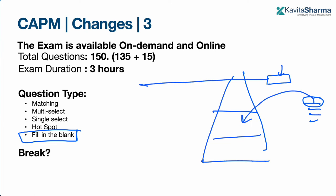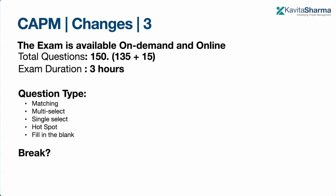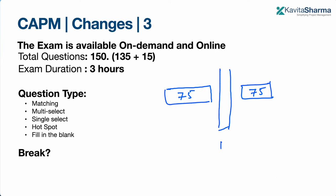You can take the exam from home as well. There is an optional break: the 150 questions are divided into Part A (75 questions) and Part B (75 questions) with an optional 10-minute break in between, which is exclusive of the three-hour exam time. The timer starts, runs through Part A, and resumes when you start Part B.